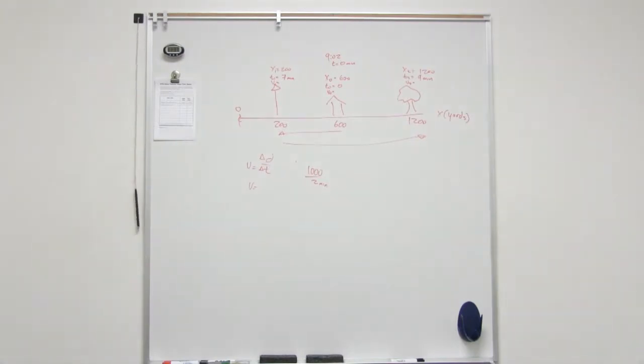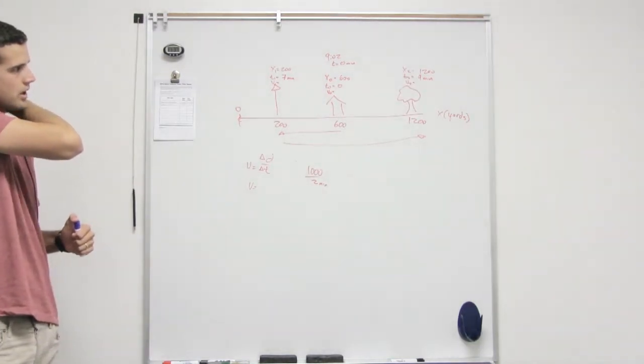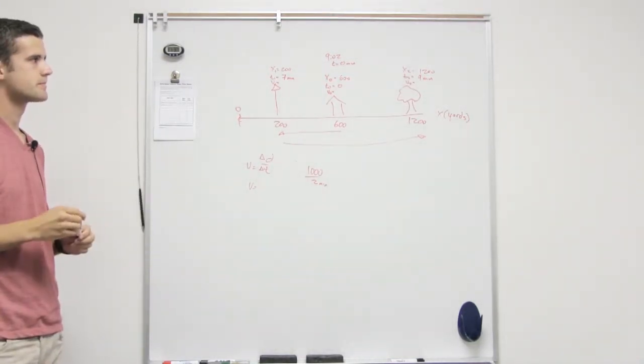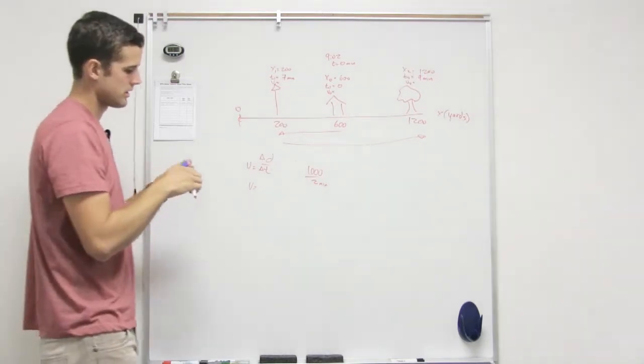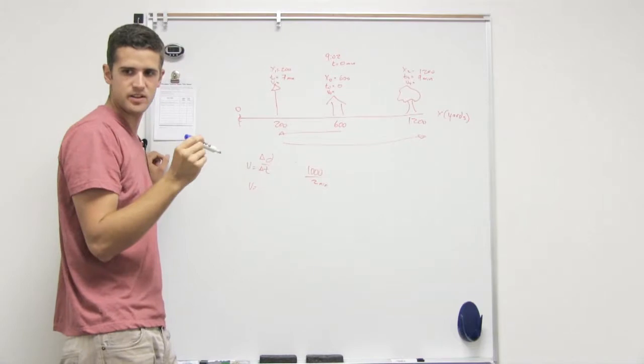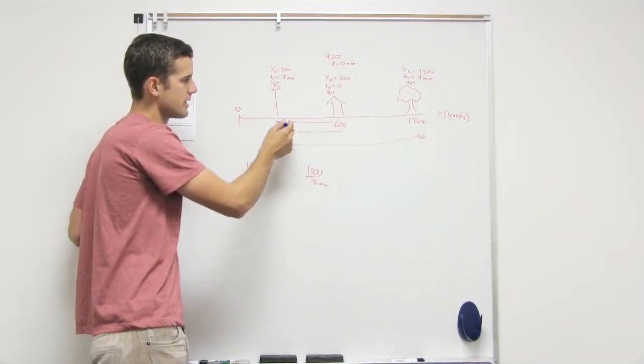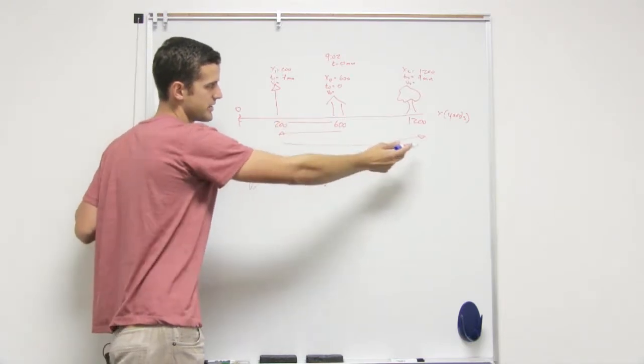Okay, so now we need the average velocity for the whole run. So do we just take what we got and divide it by two? The only reason that would work if you added them and then divided them is because he's going at this speed for seven minutes and then he's going to this speed for two minutes.